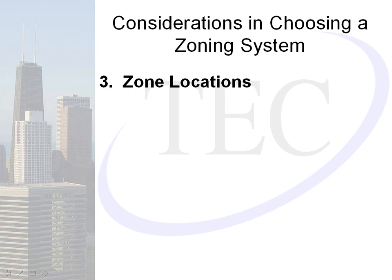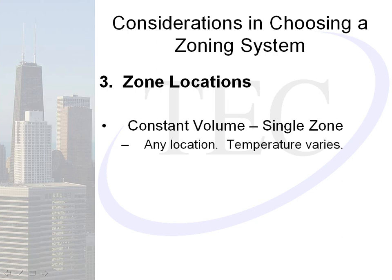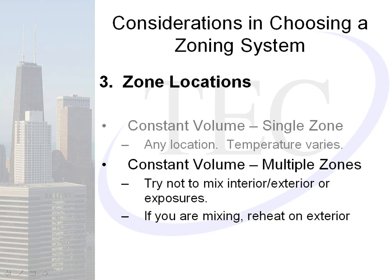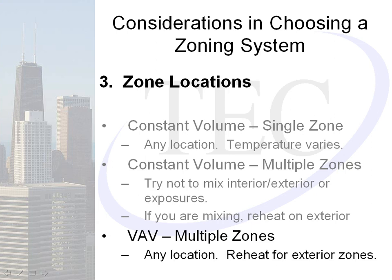The third consideration is zone locations. For constant volume single zone, any location works as temperature will vary accordingly. For constant volume multiple zones, we try not to mix interior and exterior zone exposures, as there will be significantly different load patterns. It's best to keep exterior zones on one system and interior on another. If mixing, you definitely want to put reheat on your exterior zones. For VAV multiple zones, any location works, but reheat for exterior zones is a definite.